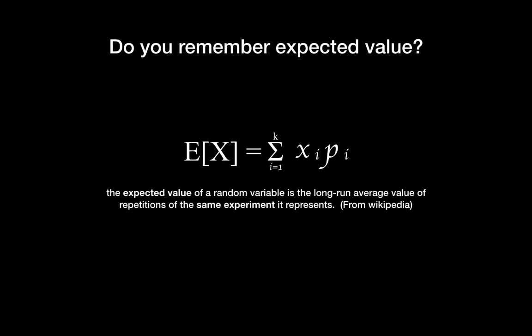Now, it is time to revisit the definition and equation of the expected value. Expected value equation is like this, and the definition is the long-run average value of the same experiment it represents. Here, x is a random variable. For example, if the event is a coin, x can be front side or back side. If the event is a dice, x can be 1 to 6 value, and p_i will be the percentage how often the event will occur.